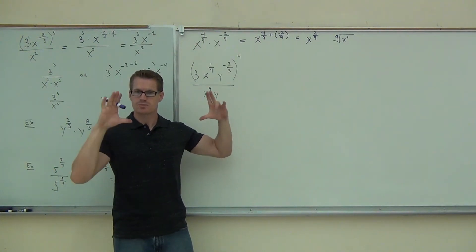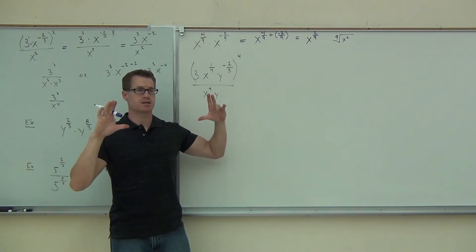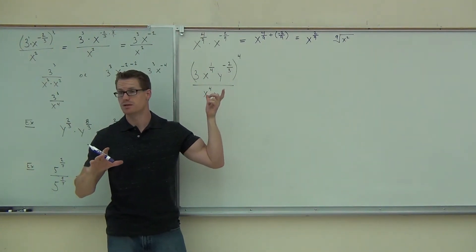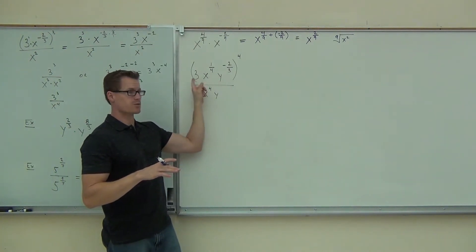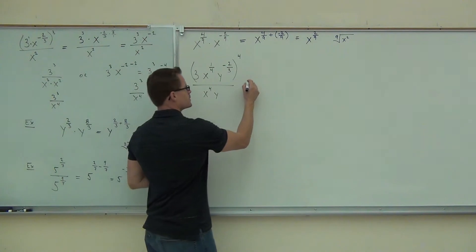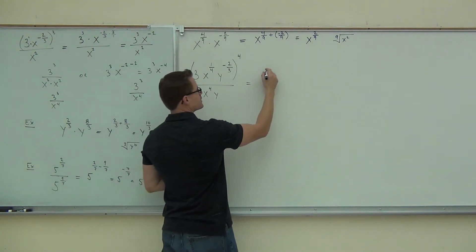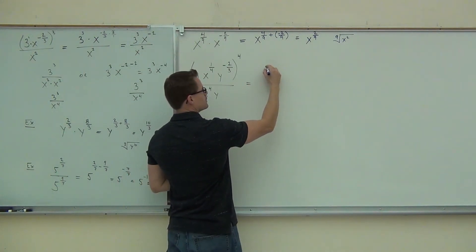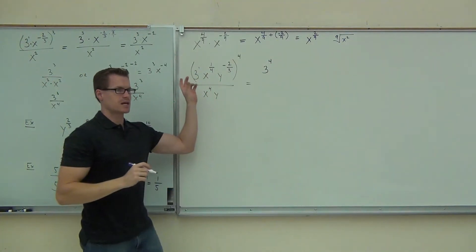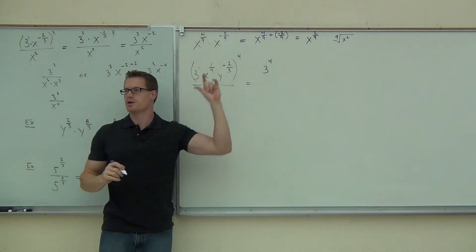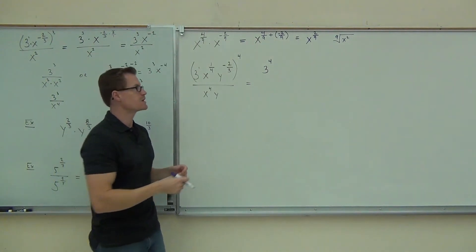So we have this large parenthesis all raised to the fourth power. Can you tell me how many things inside of my parenthesis are being raised to the fourth power? How many? Three. So not just these two, we also have that number three. Don't forget about that three. So we know that this is going to give me what? Three to the fourth power. The reason why is because I have three to the first power. I've taken an exponent to an exponent, it means multiply. One times four is four, and that's why we get three to the fourth.